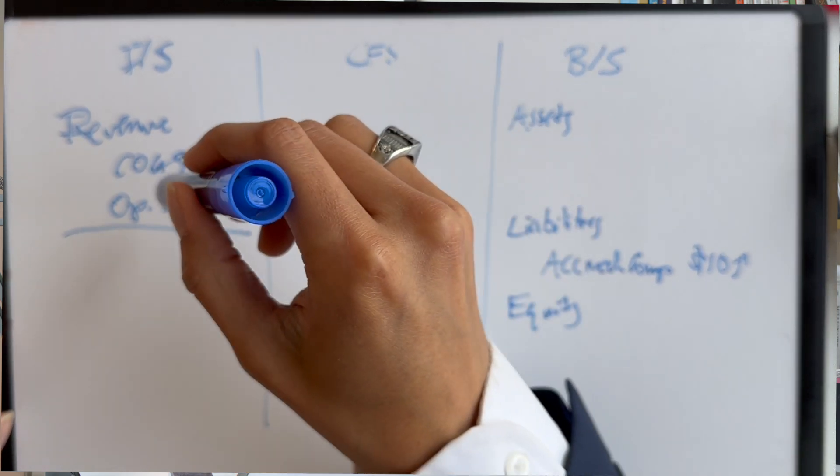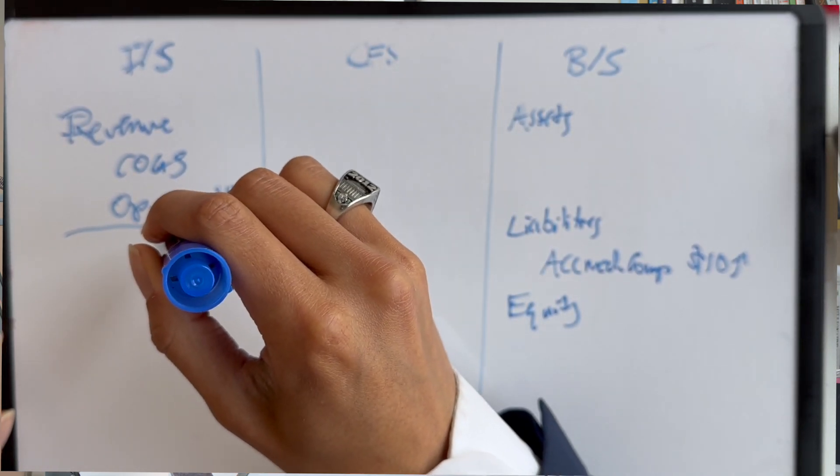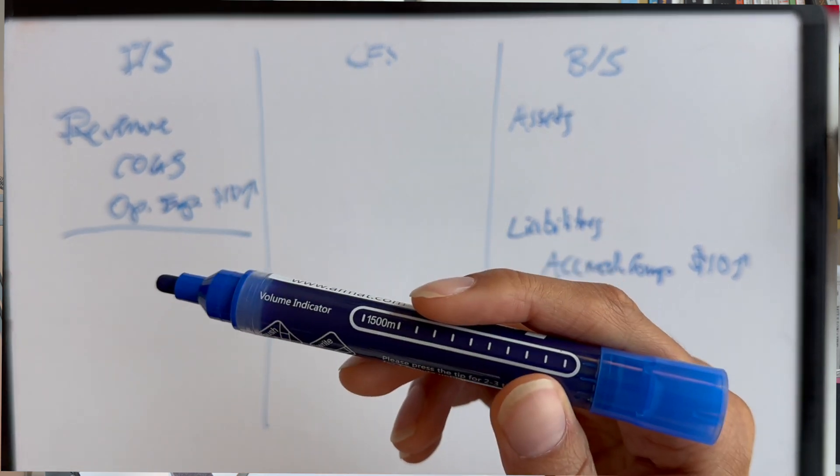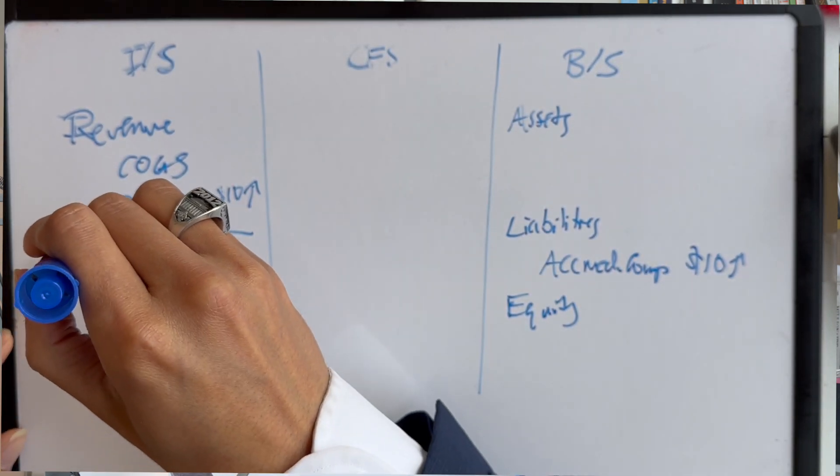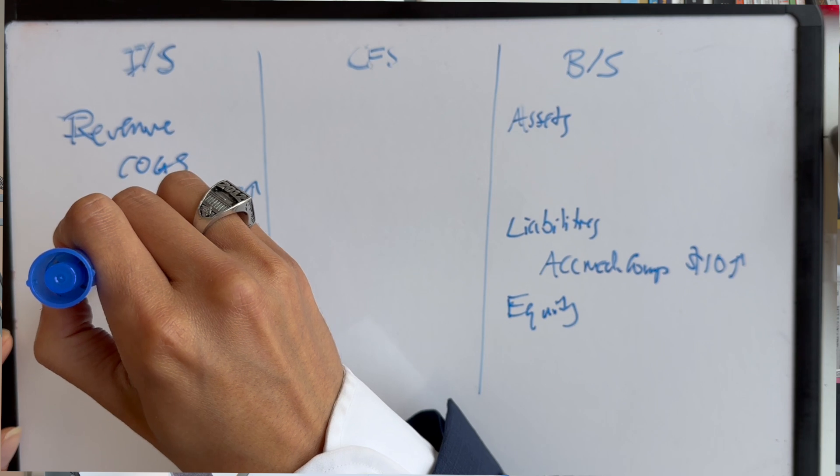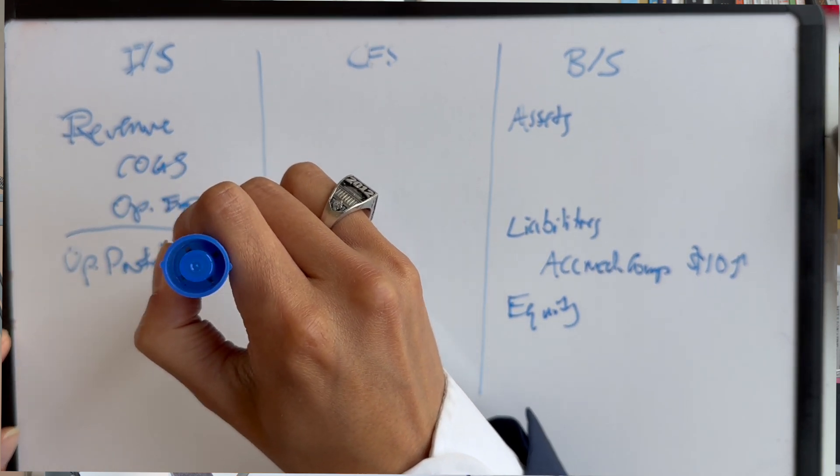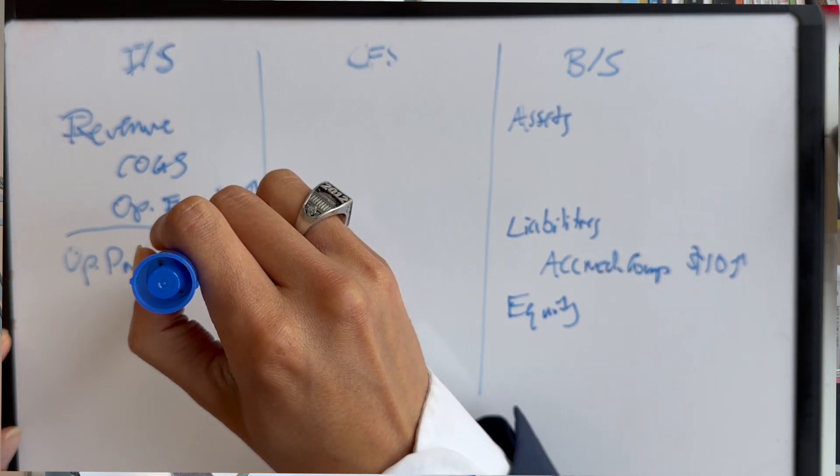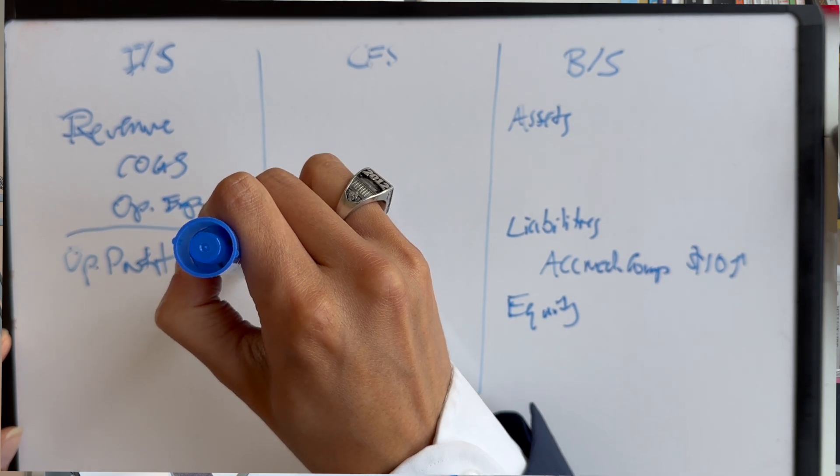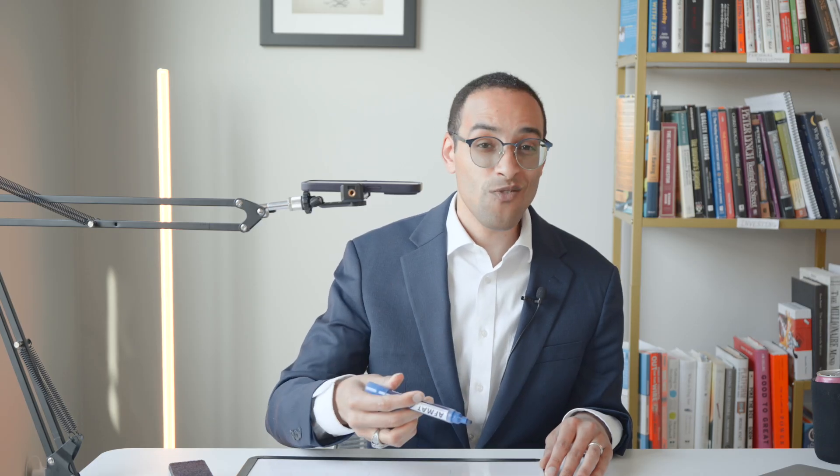And remember, if you subtract your cost of goods sold and your other expenses from your revenue, you get operating profit. So, operating profit is going to go down by $10. Remember? So, expenses increase, profit goes down, right? So, operating profit goes down by $10.